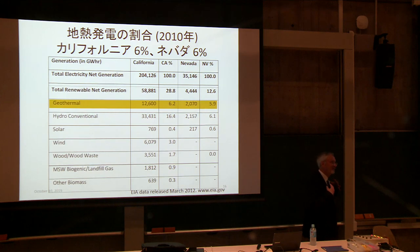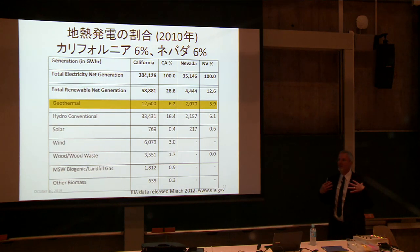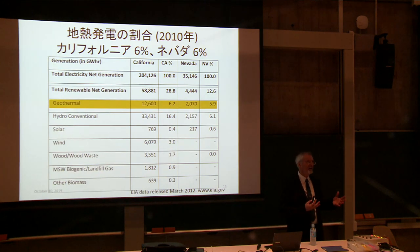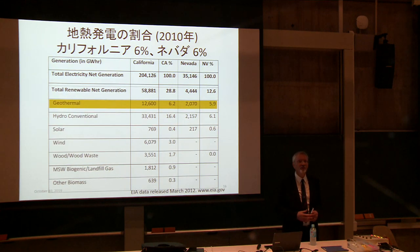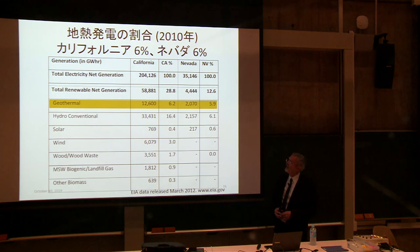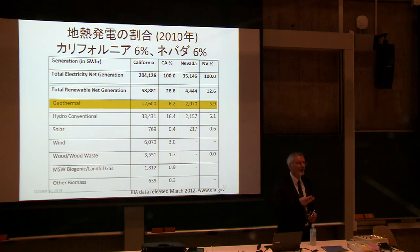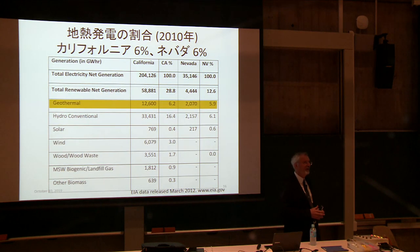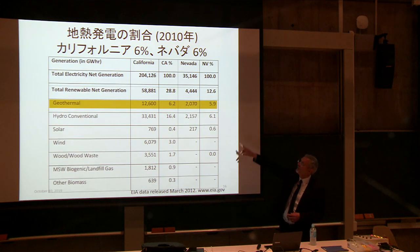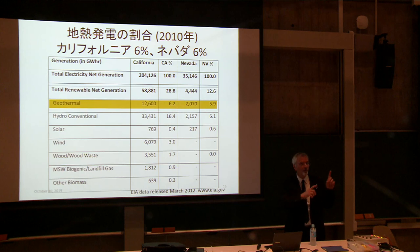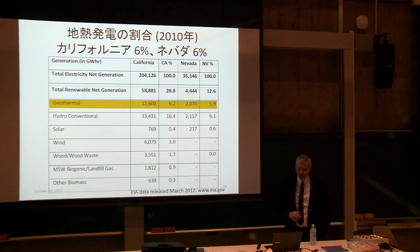I'm from California, so let me talk about California for a few minutes. Our grid is made up of a lot of renewable energy, and how we integrate it is a story similar to Japan. I'll show you snapshots of 2010, 2013, 2015, and 2017, showing how things are changing very rapidly. This is electricity generated in the state of California in 2010 — 200,000 gigawatt hours — and about a quarter was generated from renewable sources.